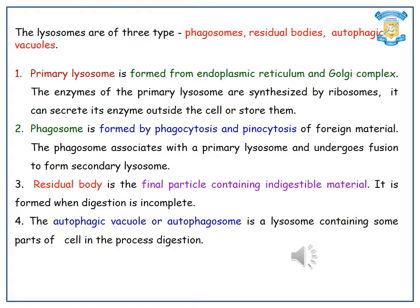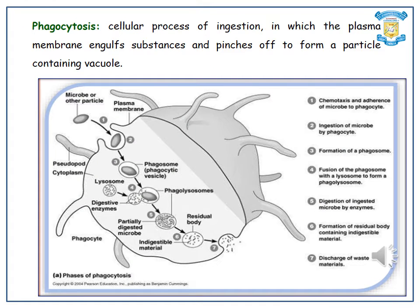The autophagic vacuole, or autophagosome, is a lysosome containing some part of the cell in the process of autophagy. This is a cellular process of ingestion in which the plasma membrane engulfs substances and pinches off to form a particle-containing vacuole. The steps of phagocytosis are: chemotaxis and attachment of microbe to phagocyte, ingestion of microbe by phagocyte, formation of a phagosome, fusion of the phagosome with a lysosome to form phagolysosome, digestion of the ingested microbe by enzymes, formation of the residual body containing indigestible material, and discharge of waste materials.